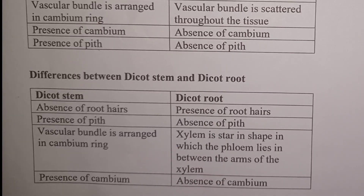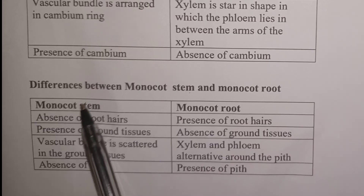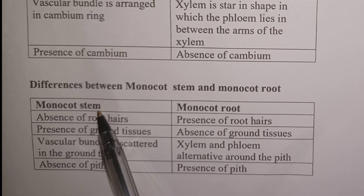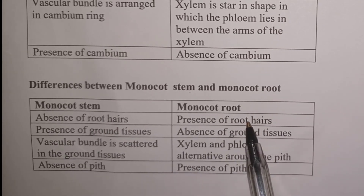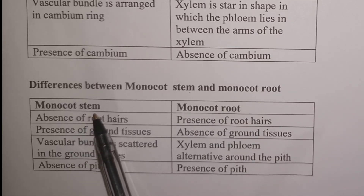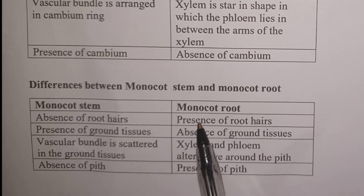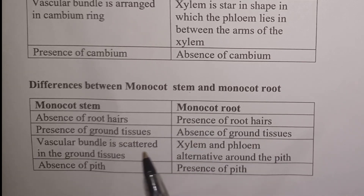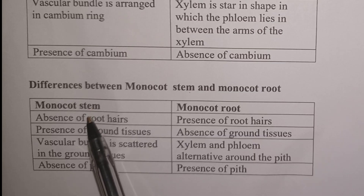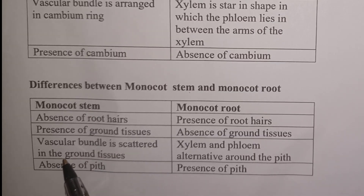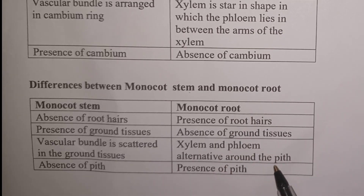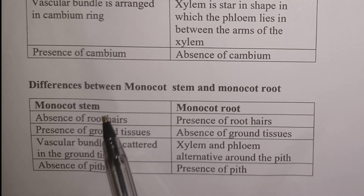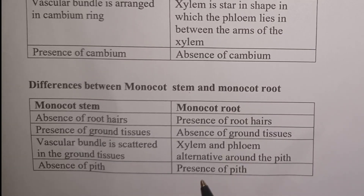Finally, differences between monocot stem and monocot root: in monocot stem there is absence of root hairs, while in monocot root there is presence of root hairs. In monocot stem there is presence of ground tissues, while in monocot root there is absence of ground tissues. In monocot stem the vascular bundle is scattered all over in the ground tissue, while in monocot root the xylem and phloem alternate around the pith. In monocot stem there is absence of pith, while in monocot root there is presence of pith. That is the end of our lesson — for more videos, subscribe to our channel.